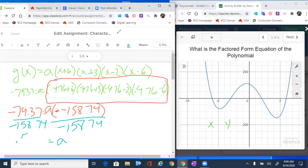Once we've made those calculations, we just need to rewrite the equation and then check our work. So g(x) equals—wherever I see that a value, I'm going to put 0.5—and then I just write the rest: x plus six, x plus three, x minus two, and x minus six.